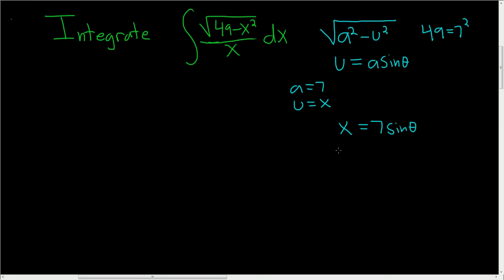So our substitution is simply x equals 7 sine of theta. Now we can go ahead and compute dx. So dx is equal to 7 cosine theta d theta. So we've taken care of the dx, we've taken care of the x. The only thing that remains is the numerator.